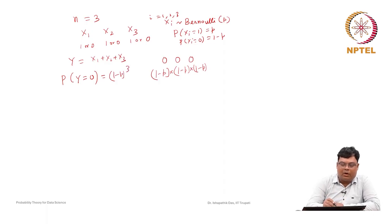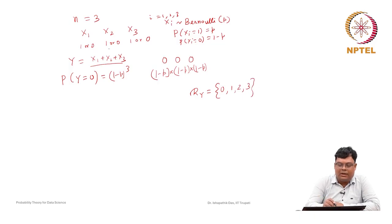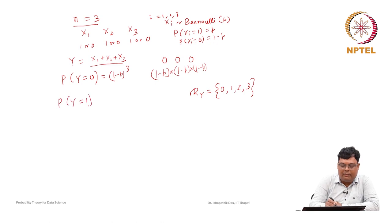So the probability of Y = 0 is (1−P)^3. Now we can determine the range of Y: it can be 0, 1, 2, or 3 — in general, from 0 to n. Next, we need to find P(Y = 1) to build the probability mass function.